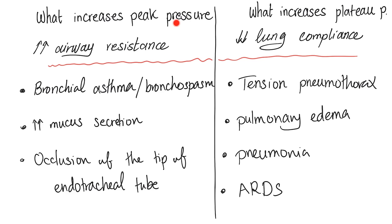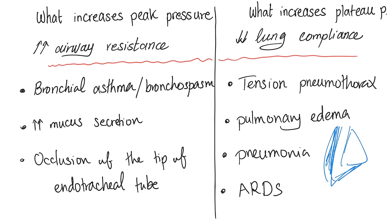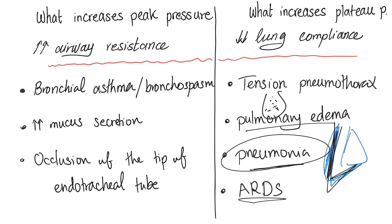What increases peak pressure? Anything that increases airway resistance: bronchial asthma/bronchospasm, increased mucus secretion, occlusion of the endotracheal tube tip. What increases plateau pressure? Anything that decreases lung compliance: tension pneumothorax (air surrounding the lung prevents easy expansion), pulmonary edema, pneumonia (consolidation in alveoli), and ARDS — acute respiratory distress syndrome. In ARDS, the lung is certainly not compliant.